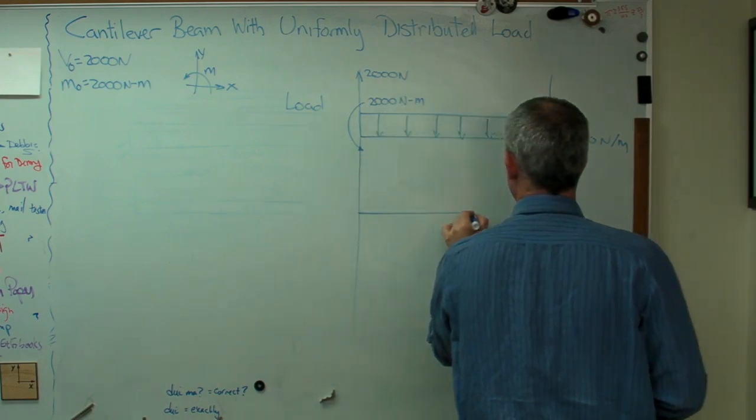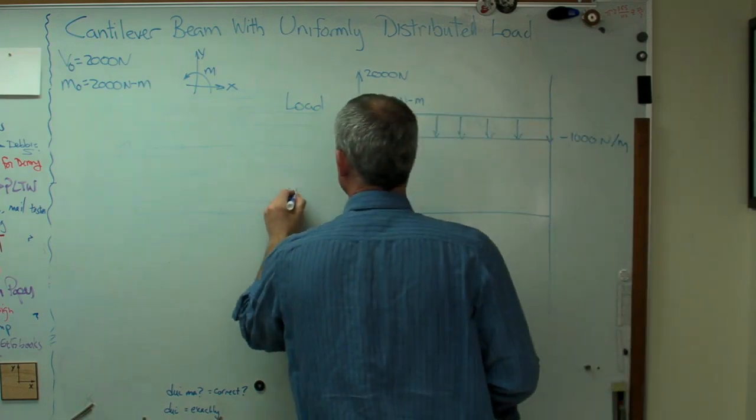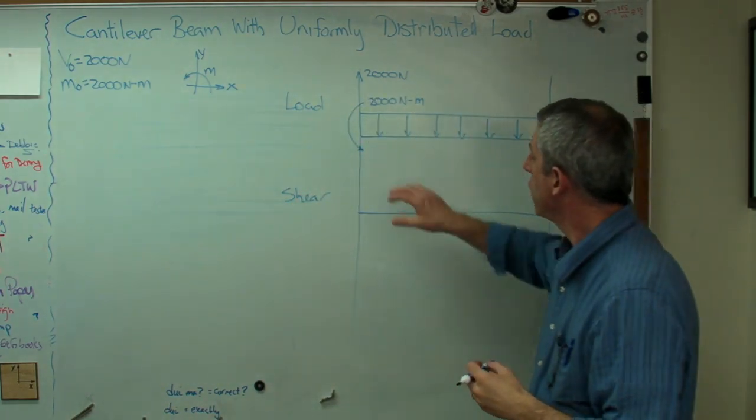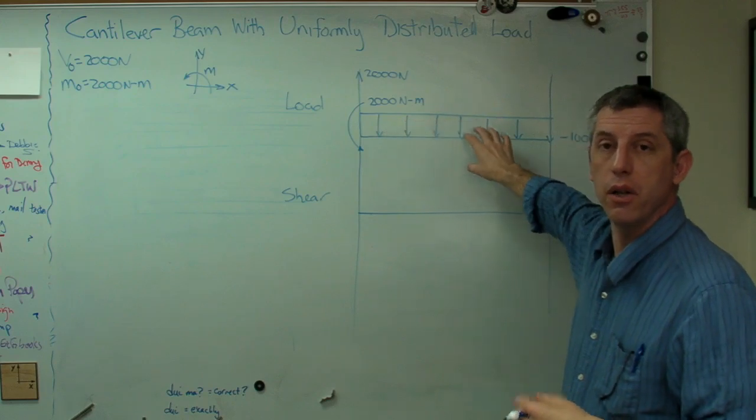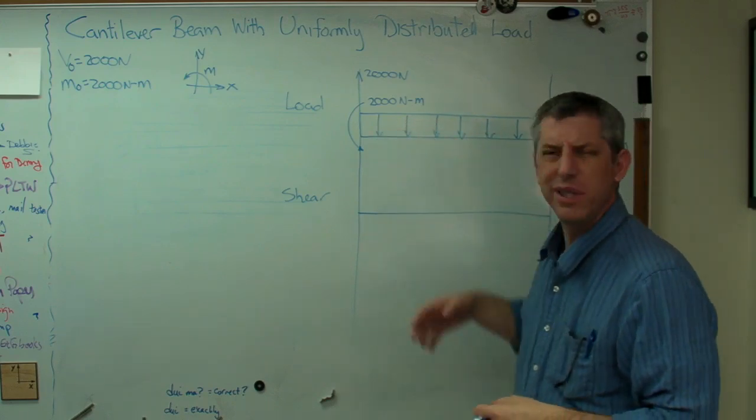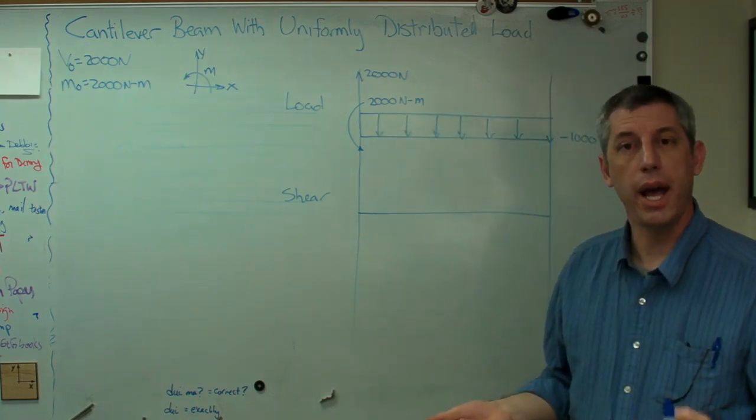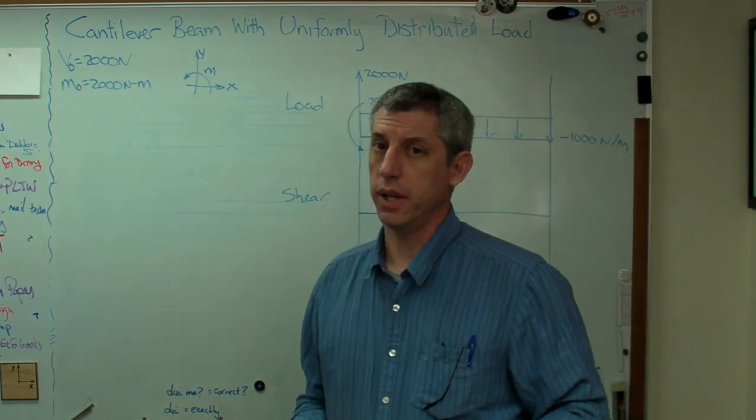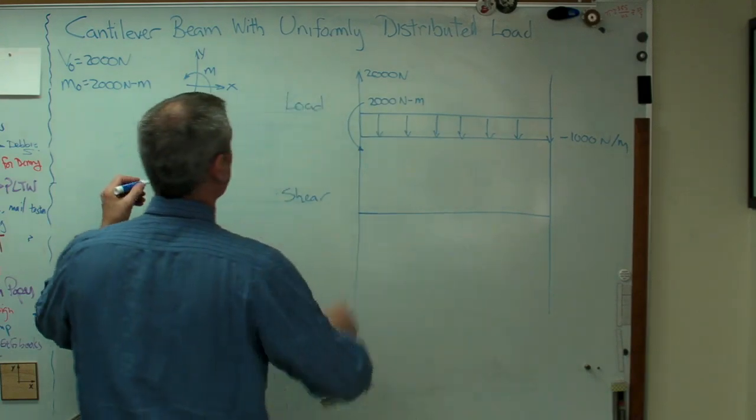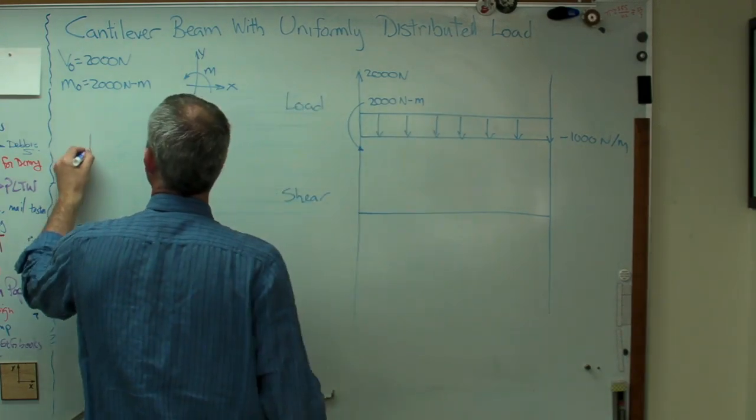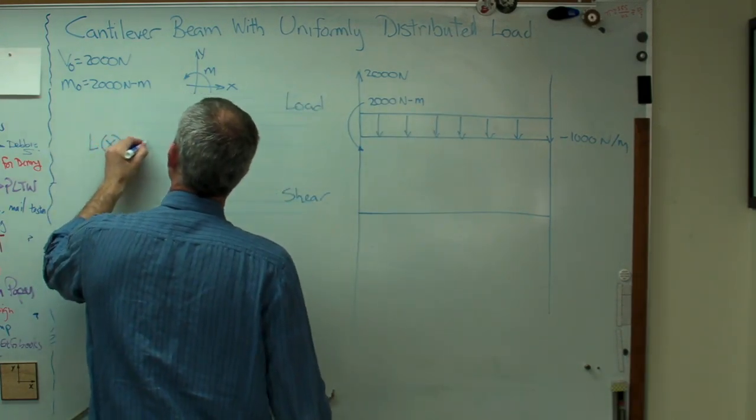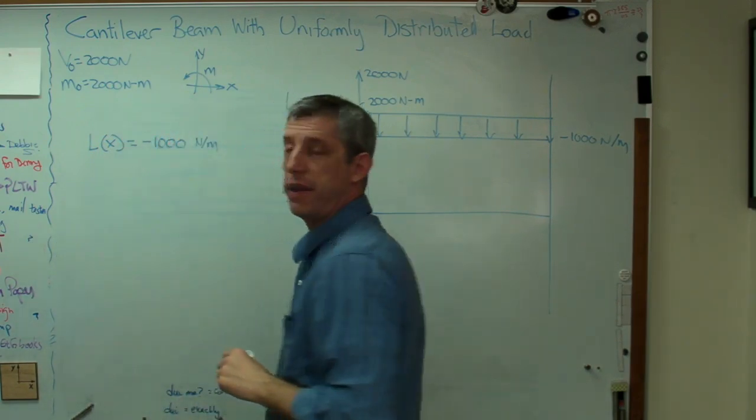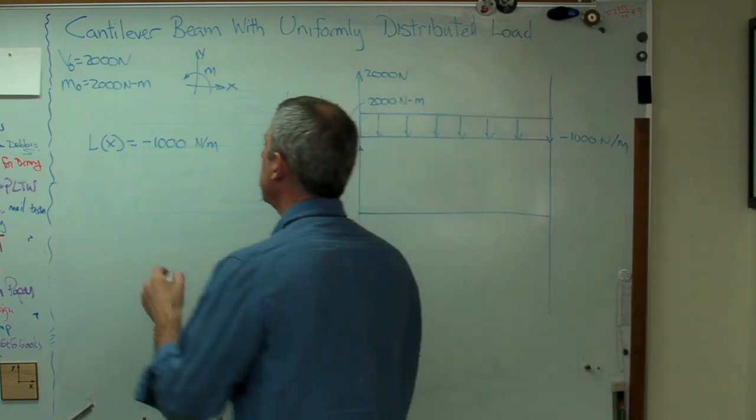So let's draw the shear now. Okay. So the way we're going to draw the shear, shear is just accumulated load as you go down the beam. Well, what does accumulated mean? Accumulated means you add it up. Well, adding up. That sounds like area. That sounds like integration to me. So let's draw the distributed load here. We need a function for that. And this is about as simple a function as there could possibly be. It's just minus 1,000. It's just a constant.